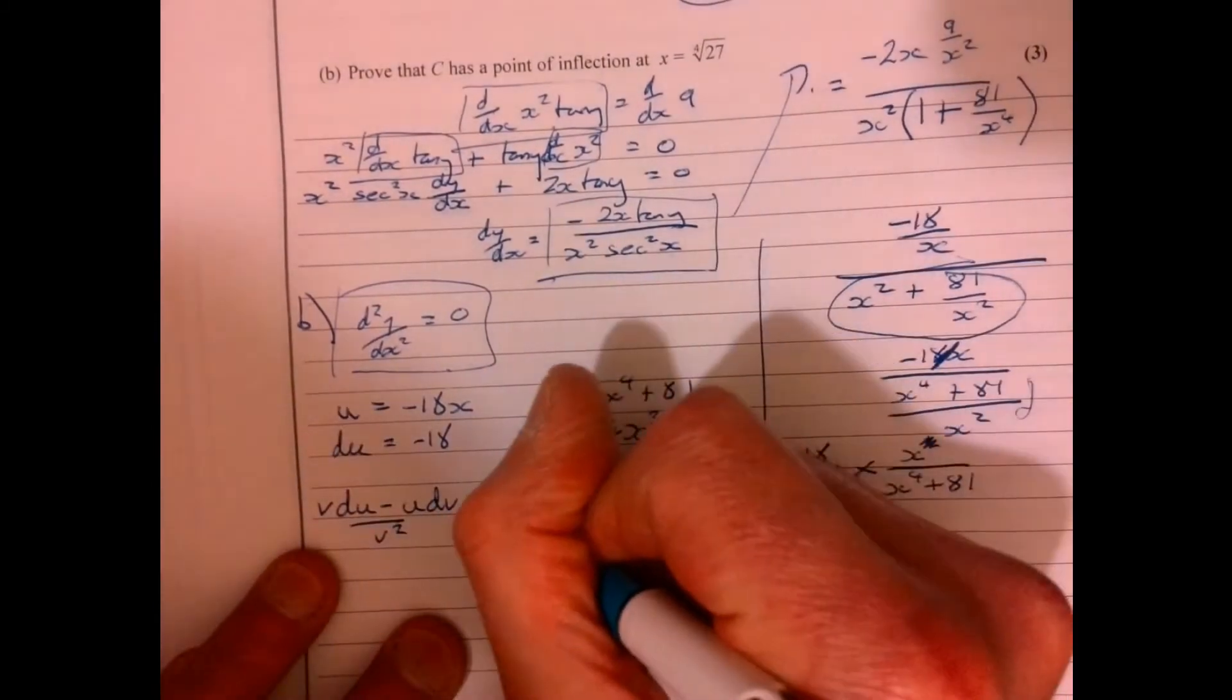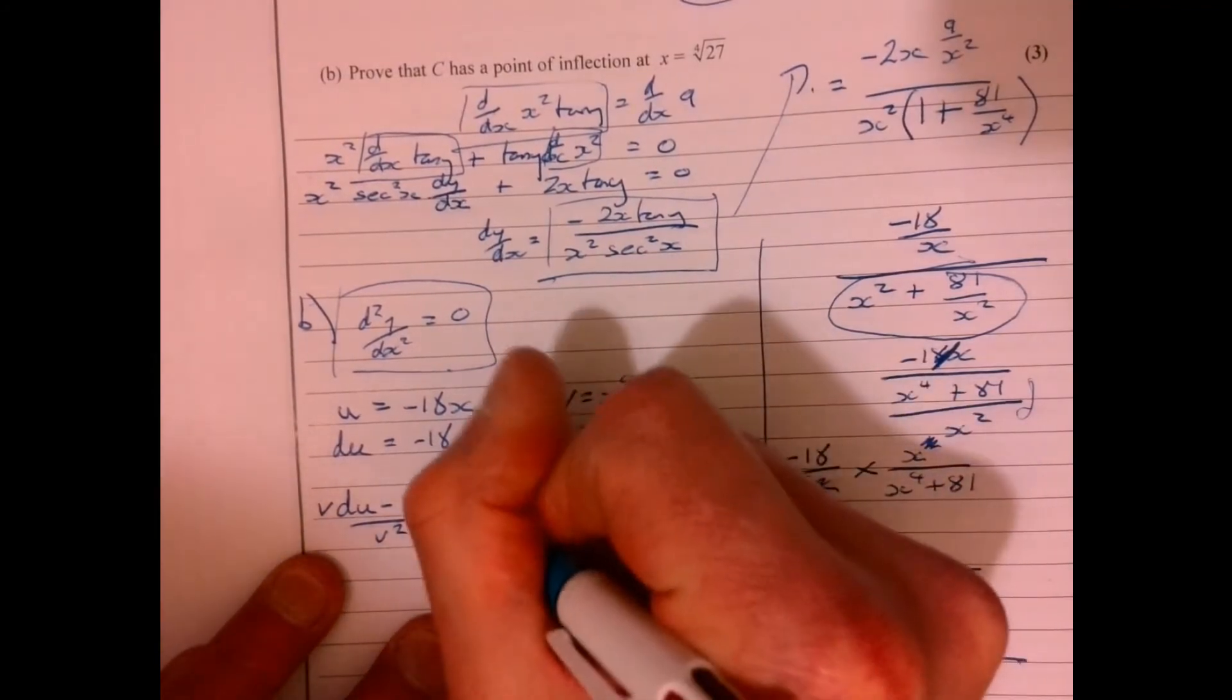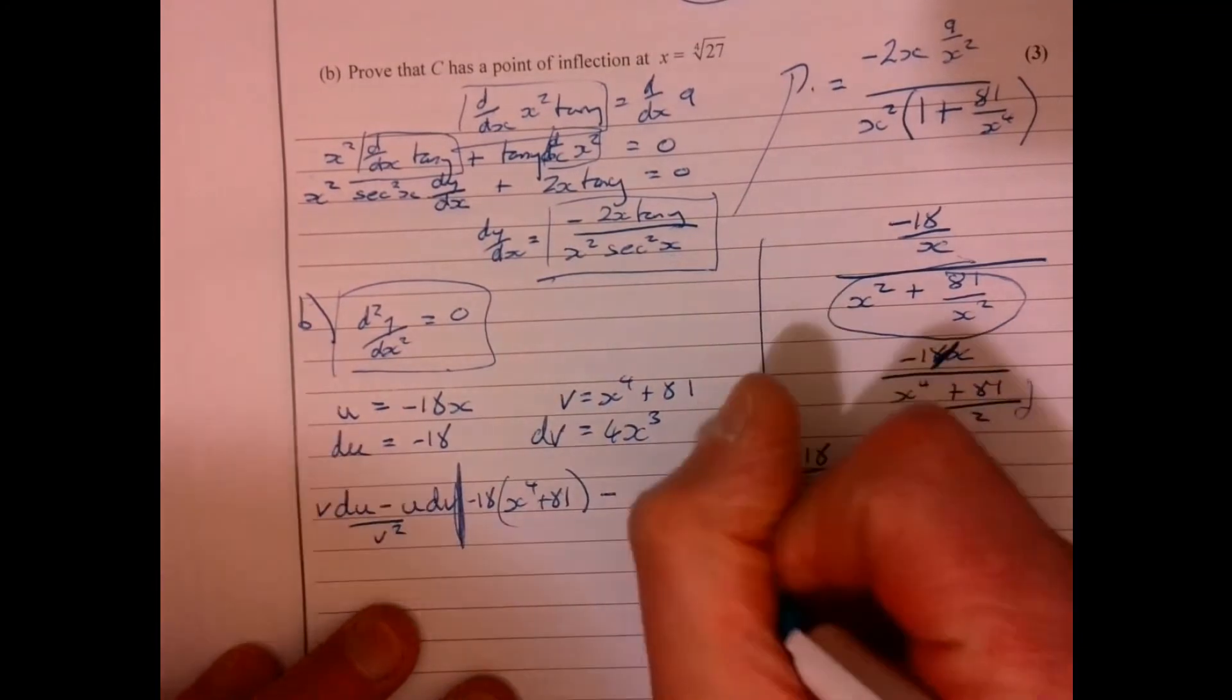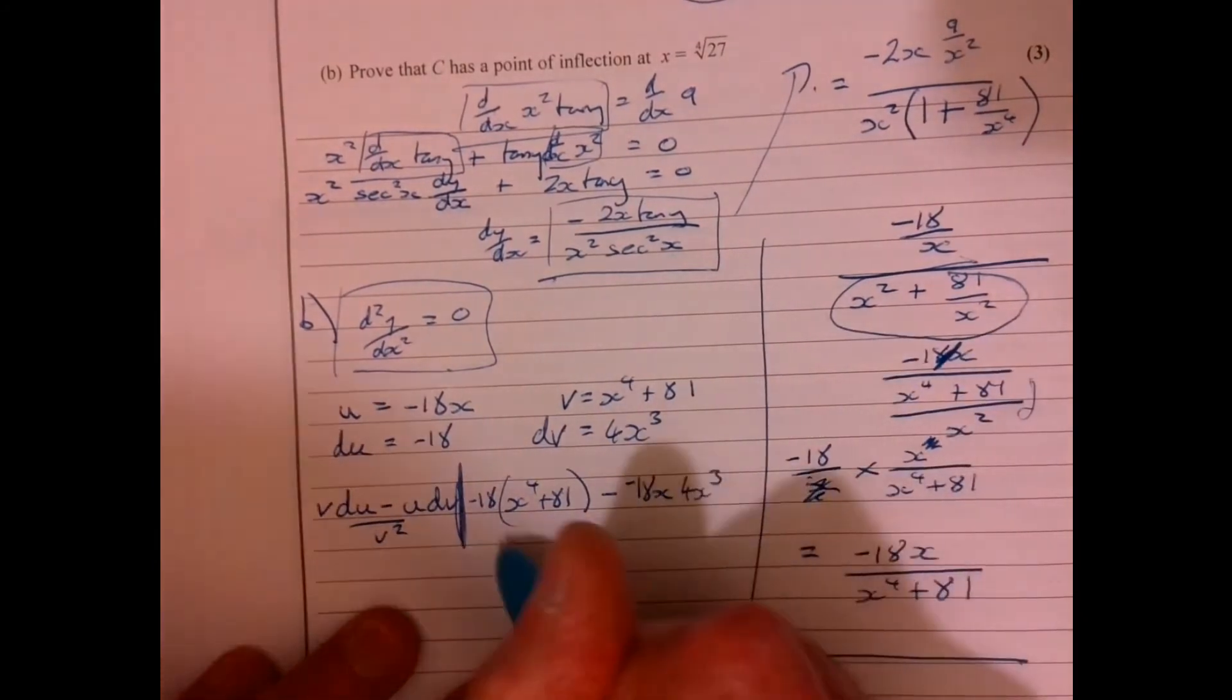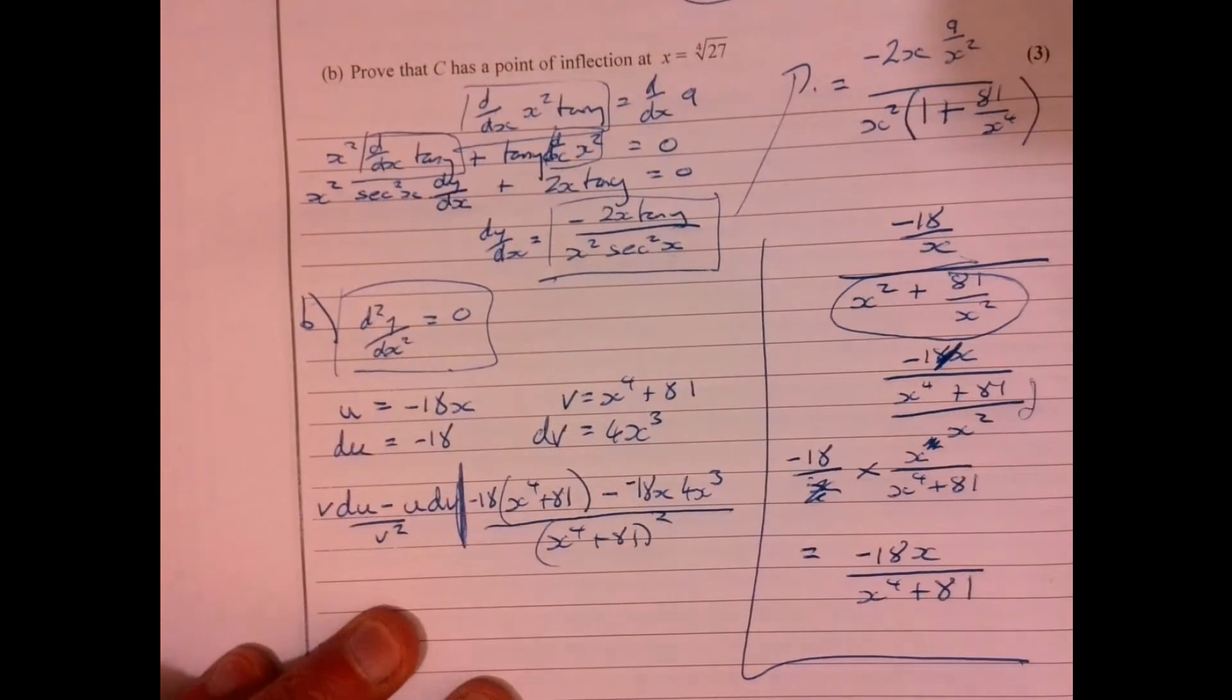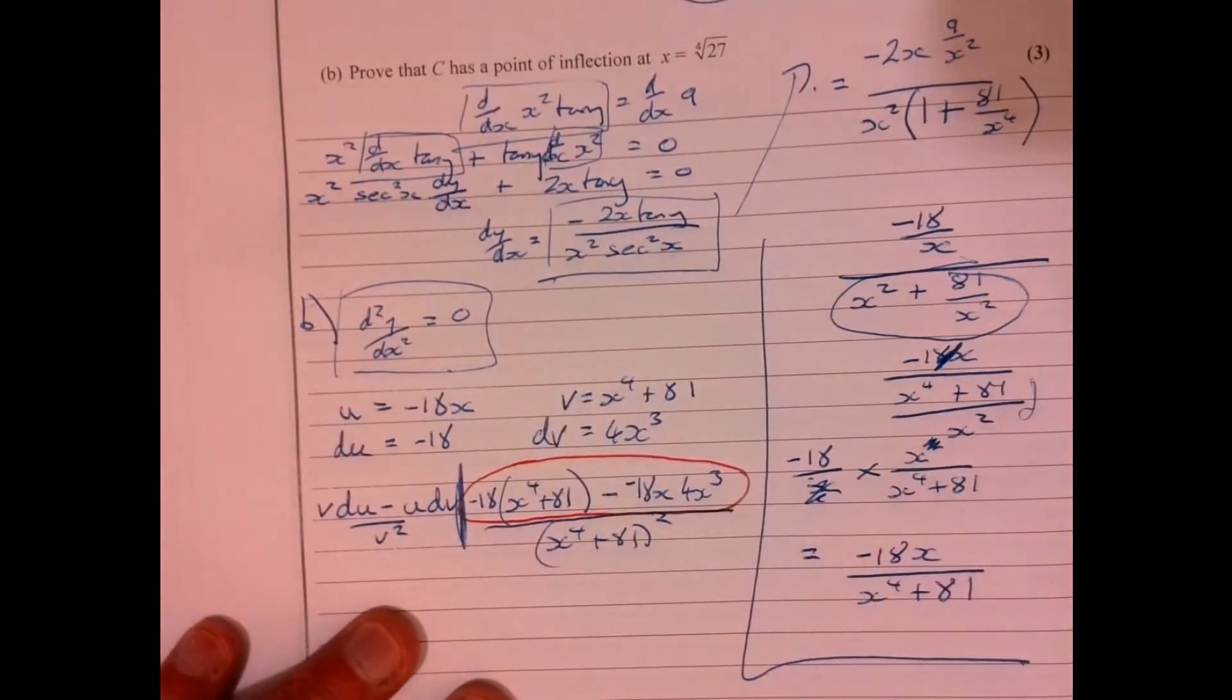That's what we're going to do. So v. So we've got x to the 4 plus 81. And that's going to be multiplied by the minus 18. And then we're going to take away u dv. So minus 18x multiplied by 4x cubed. And then that's all over v squared. Now it looks absolutely horrid, to be honest. Actually, it's not too bad. And the reason is, it's because we're only really interested in the numerator. Because we're interested in when it's equal to zero. And that's what we're actually doing.